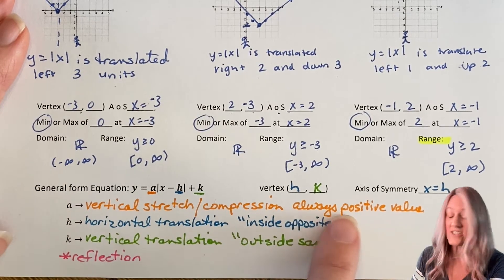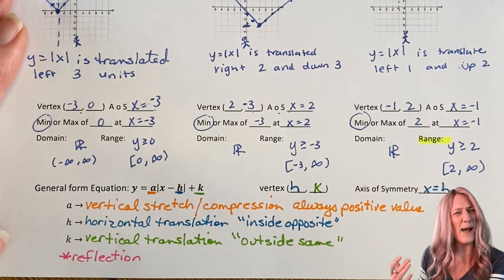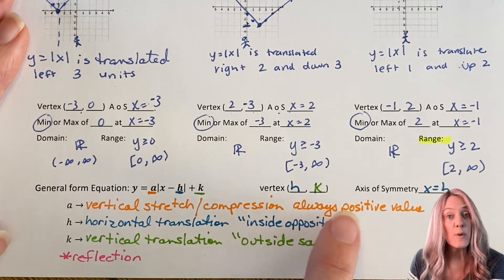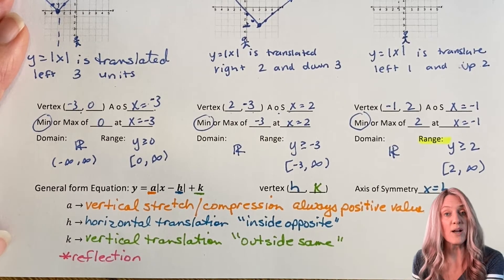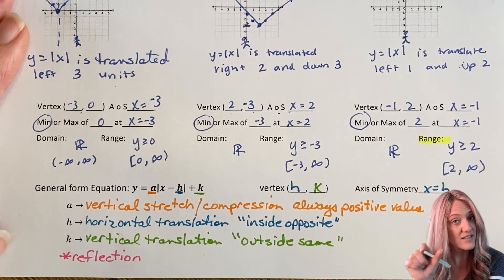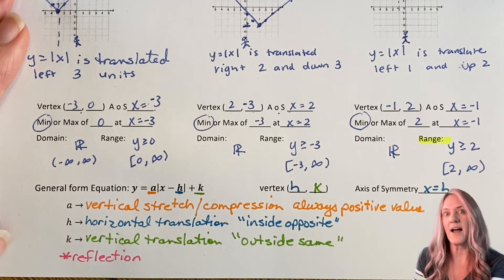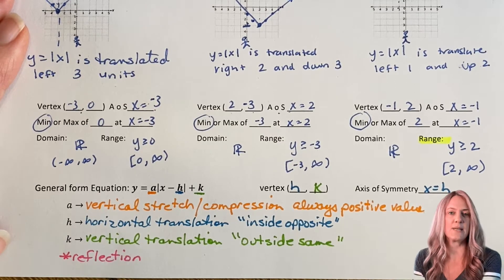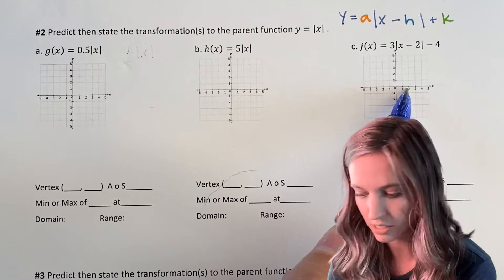The a value is always reported as positive. If it happens to have a negative in front of it, it's a reflection. That's why we always report that a is a vertical stretch or compression by a factor of whatever the positive value is. If there is a negative, we're going to talk about what words to use for that.